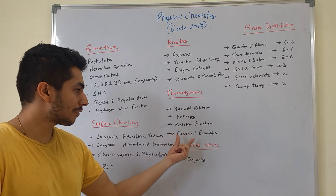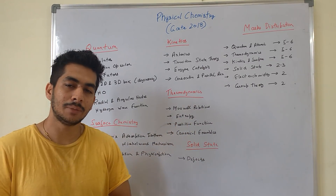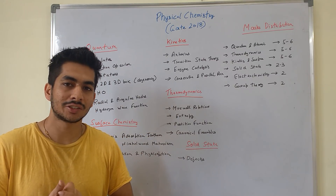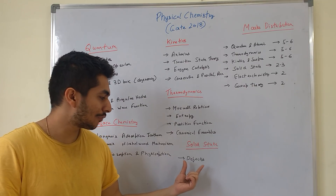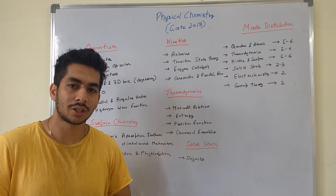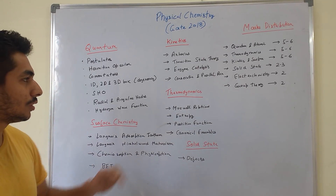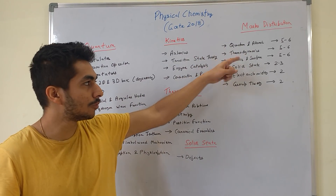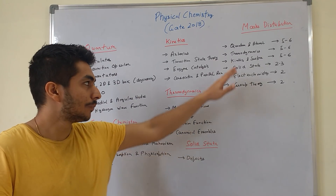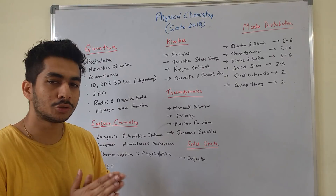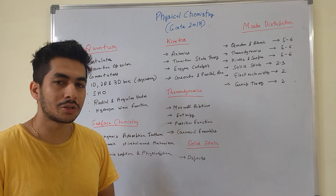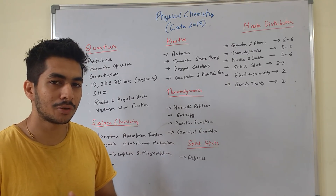For solid state, the preparation is similar to NET. For GATE specifically, focus on defects in crystals — Frenkel defect, Schottky defect, and related defects. Looking at the marks distribution: quantum carries 5 to 6 marks, thermodynamics the same, kinetics around 4 marks, surface chemistry at least 2 marks, and solid state about 3 marks — generally one one-marker and one two-marker question.